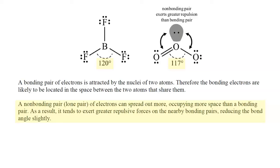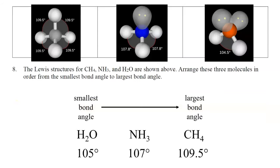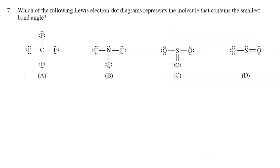Looking at H2O, NH3, and CH4: CH4 has the standard tetrahedral bond angle of 109.5 degrees. NH3 has a lone pair on the central nitrogen, so its bond angle is slightly less than 109.5 — approximately 107 degrees. H2O has two lone pairs, reducing its bond angle further to approximately 105 degrees. The greater repulsive forces of lone pairs slightly decrease bond angles.